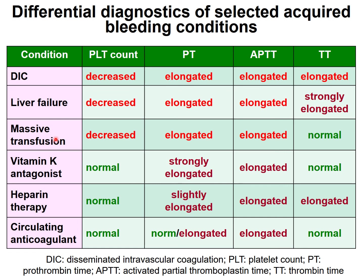With vitamin K antagonist therapy or overdose: normal platelet count, very highly prolonged PT, elongated APTT (though less than PT), and normal thrombin time. With heparin use: similar pattern but APTT is elongated more than PT. With circulating anticoagulant: depending on which anticoagulant, either PT or APTT may be elongated to varying degrees.